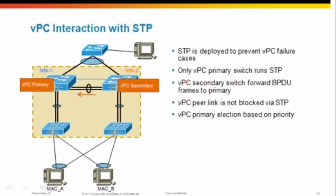Let's talk about VPC interaction with Spanning Tree. Spanning Tree protocol is deployed to prevent VPC failure cases. Only the VPC primary switch will run Spanning Tree protocol. The secondary VPC member, 5K2, will forward BPDU frames to the primary. Keep in mind the VPC peer link is not blocked via Spanning Tree. VPC primary election is based on priority — in this example 5K1 on the left is the primary and 5K2 on the right is the secondary.